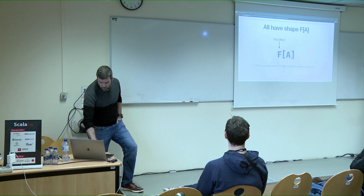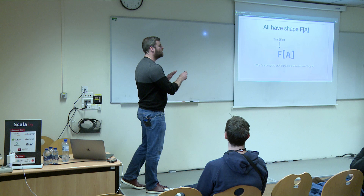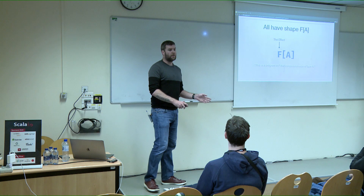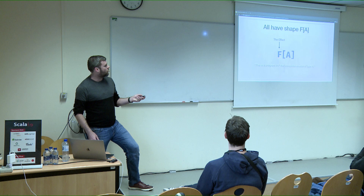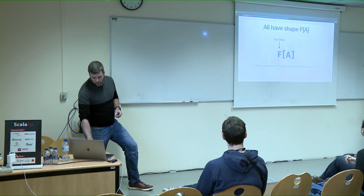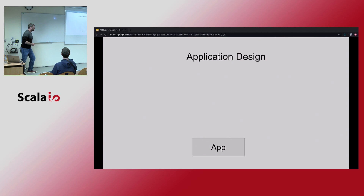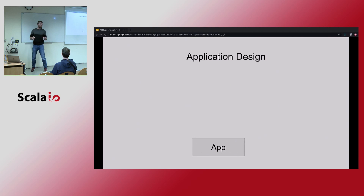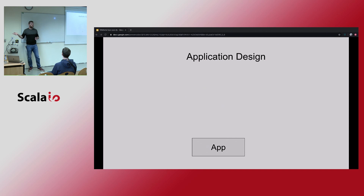Normally at this point a similar talk would go into the Monad tutorial. We're going to skip the Monad tutorial - there are lots of them out there - and go straight to designing an application. We are going to talk about how we use this shape in designing an application. The application is a service that uses Twilio to send a text message. Our app needs to receive an HTTP request from the internet and then, using Twilio's API, send a text message.